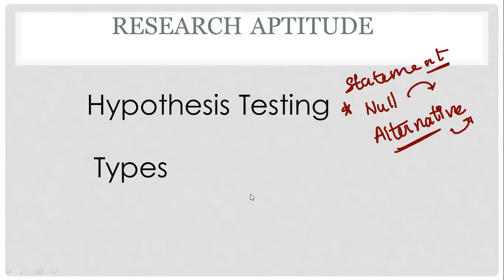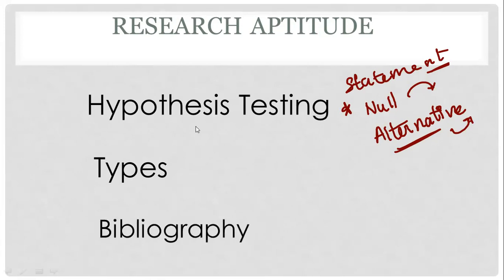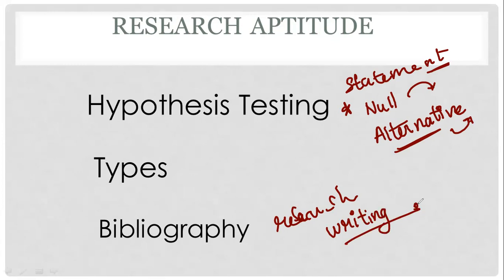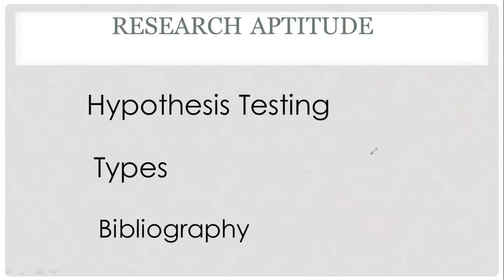Types of research — there are questions. For example, historical research, ethnographic research, and so on. There is a keyword for each. You can answer types of research. Bibliography — look, we are asking about bibliography. You have to concentrate on research writing. How you write, how you cite, what styles of writing — you are supposed to concentrate on that.